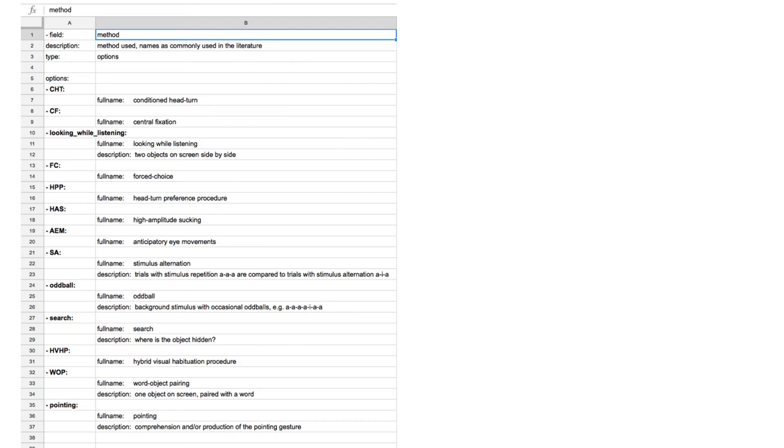Let's take a look at the possibilities for describing studies. We have created a list of possible methods we know people typically use in infant studies and have them coded with their most common abbreviation. You can add methods but try to make sure it's not already covered by the current list.